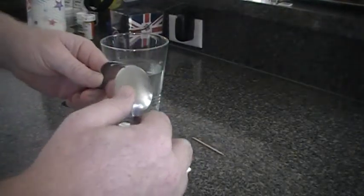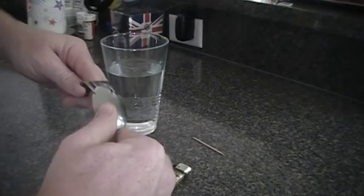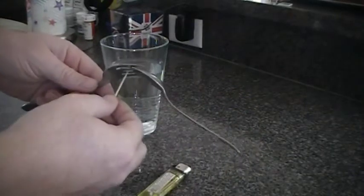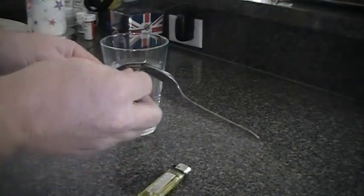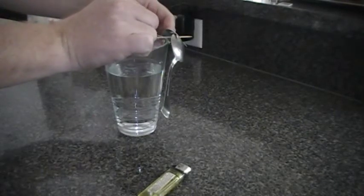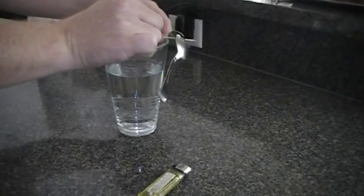What you do is you start by interlocking the spoon and the fork. You take the toothpick, slide it through the middle of the fork and you're going to find the center of balance. This might take you a couple tries.